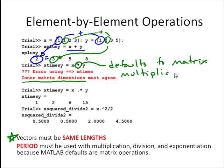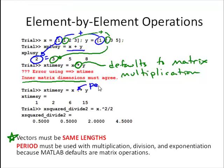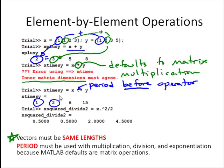Unless you're in linear algebra, you're probably not that familiar with matrix multiplication. We will talk about it later, but for now we're going to focus on element-by-element operations. To do element-by-element multiplication, division, or exponentiation, you tell MATLAB you want that by putting a period before the operator. So with a period, x times y gives us the first element of x times the first element of y, equal to 1; the second elements multiplied give 2; the third elements give 2 times 3, which equals 6, and so on.